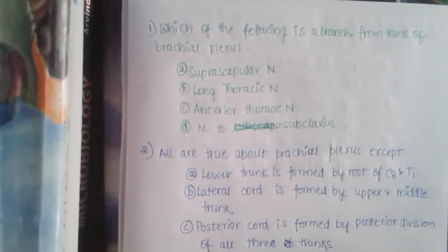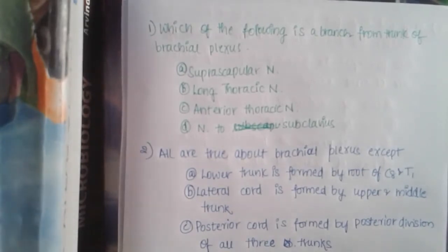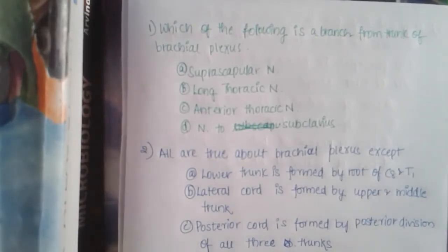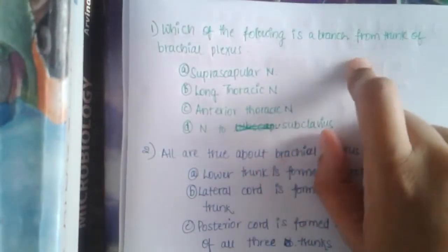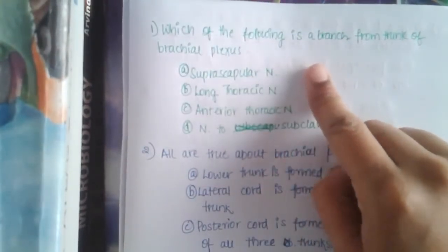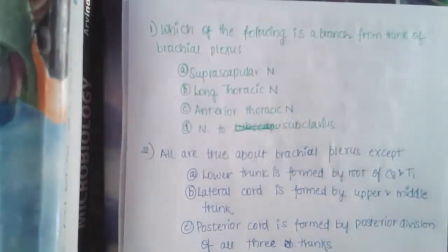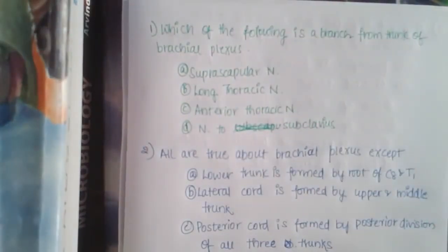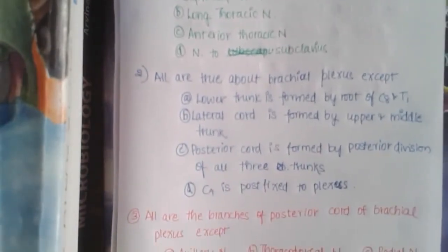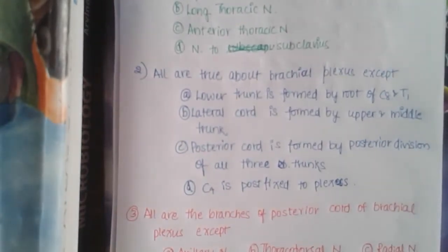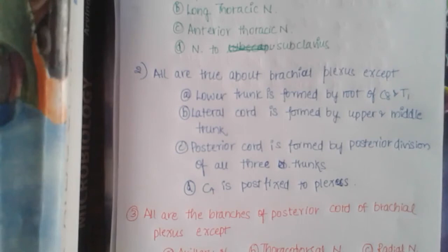The first question is: which of the following is a branch from the trunk of the brachial plexus? Is it (a) suprascapular nerve, (b) long thoracic nerve, (c) anterior thoracic nerve, or (d) nerve to subclavius? The second question is: all are true about brachial plexus except —